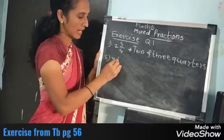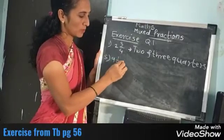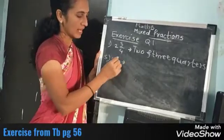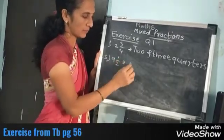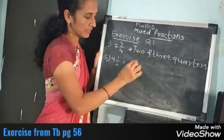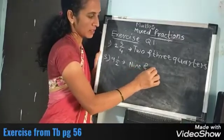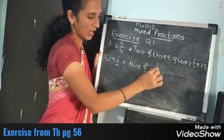9 and 1 upon 2 — how to read it? 9 and a half.